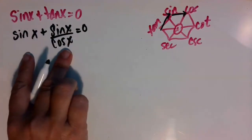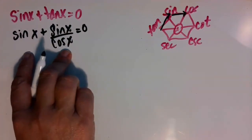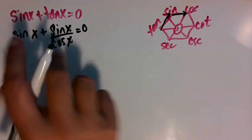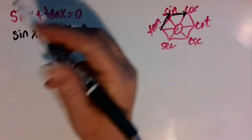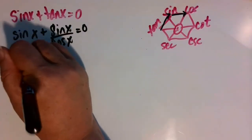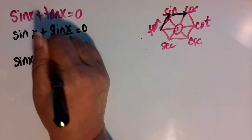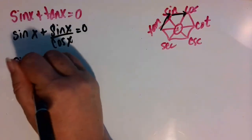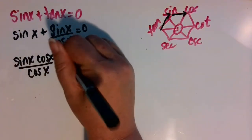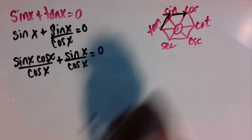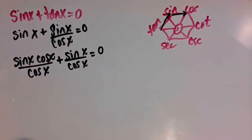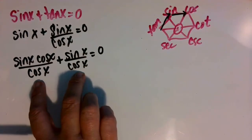Now to combine these two terms, we're going to need a common denominator of cosine of x. So I'm going to multiply this first term sine of x by cosine of x over cosine of x to get sine of x cosine of x divided by cosine of x plus sine of x over cosine of x, and that's equal to zero.